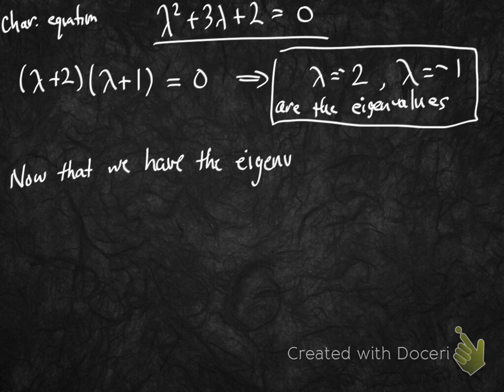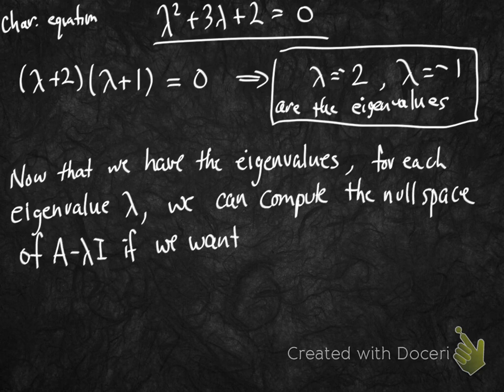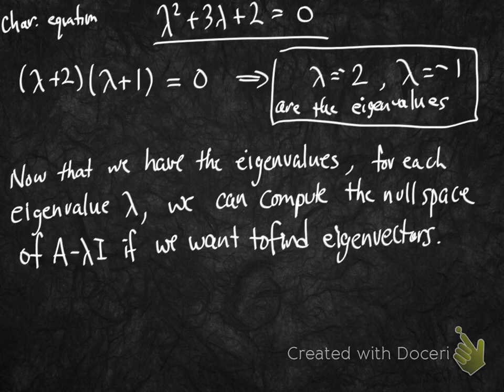Now that we have the eigenvalues, if we wanted to find the eigenvectors, we would take each value of lambda and find the null space of A minus lambda I. For a 2x2 matrix, we can sometimes do that by inspection, or we can go back to row reduction to solve.